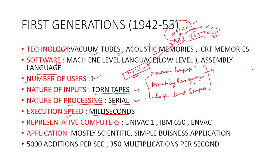The second type is assembly language, which is easier than machine language. In machine level language only zeros and ones were used, but in assembly level language it became a little easier. For example, 10 became A, 11 became B, 12 became C. Abbreviations like ADD, INT, MLT were added, and symbols were used, making it somewhat easier than machine language.